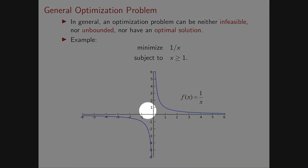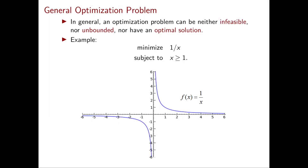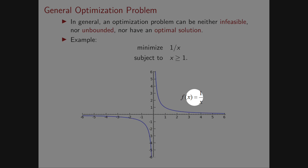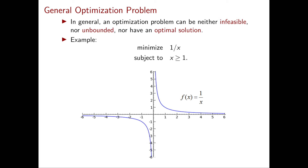We can visualize the feasible region on the horizontal axis — it starts at 1 and goes to infinity on the right — and the value of f(x) on the y-axis. The objective value at 1 is exactly 1 and it decreases as x increases. The catch is that this value keeps decreasing forever, getting as close as you want to 0, but it never actually reaches 0.